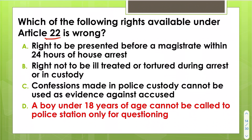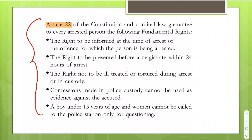Which of the following rights available under Article 22 is wrong? Under Article 22: a person should be presented before a magistrate within 24 hours of arrest — that is correct; they should not be ill-treated or tortured — correct; confessions made in police custody cannot be taken as evidence — correct. A boy under 15 years of age and women cannot be called to the police station only for questioning. The option stated '18 years' which is wrong — it should be 15 years.